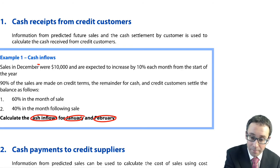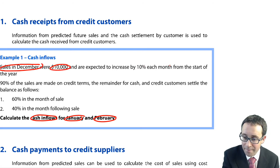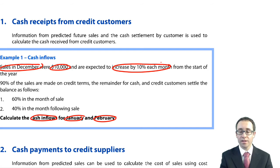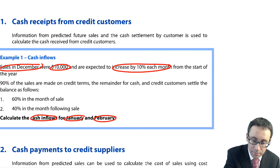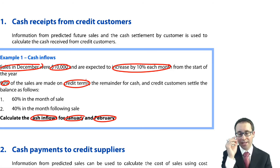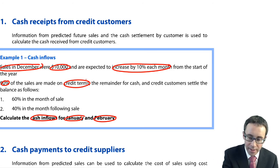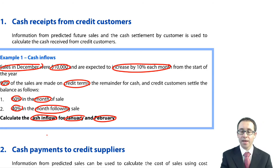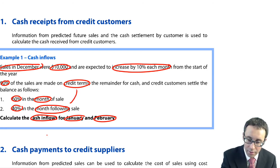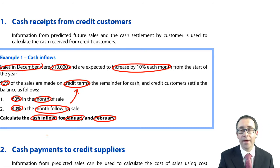We're told about our sales in December — they were 10,000 — and they're going to increase by 10% each month from the start of the year. So that's 10% for January and 10% for February. 90% of the sales are on credit, which means 10% are for cash. The instructions given are that 60% of credit receipts are collected in the month and 40% are collected in the month following. Let's look at the months: December, January, and February.